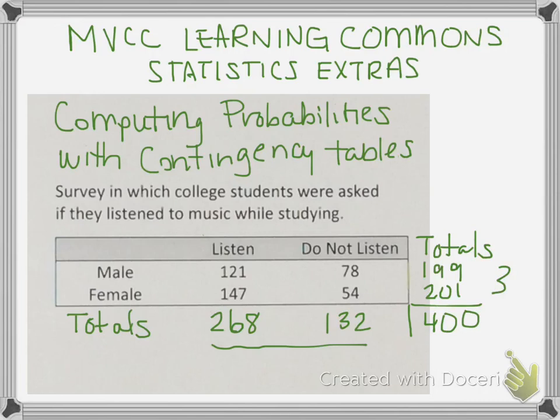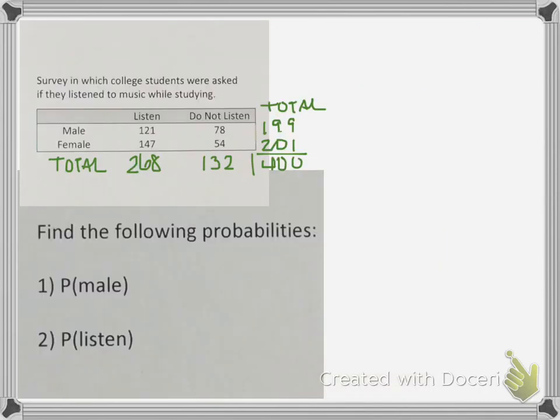So now if we want to begin by answering some questions, we're going to take these numbers to find specific probabilities. For our first question, we're looking for the probability that the student is male. In order to do this, we're going to look strictly for the male students, which is right across the top, right in here. We're looking for the total, so it'll be 199 over everybody in the chart, which is out of 400.